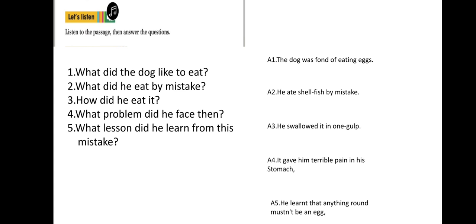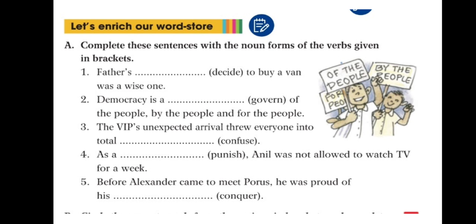Let's enrich our word store. Complete these sentences with the noun forms of the verbs given in brackets. As you can see in the bracket, the words are decide, that means to decide, that is a verb. Govern, to govern, that is also a verb. Confuse, to confuse, that is also a verb. Punish, to punish, is a verb. Conquer, to conquer, is a verb. So, how to change verbs and make noun forms?